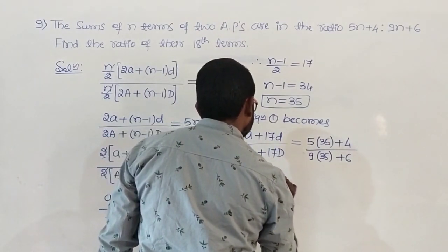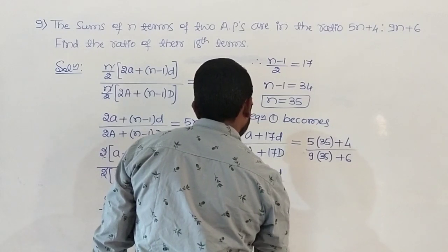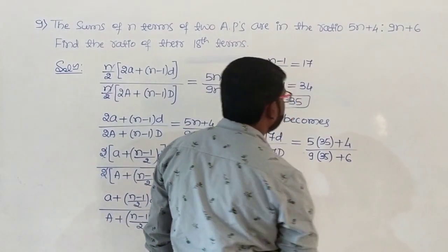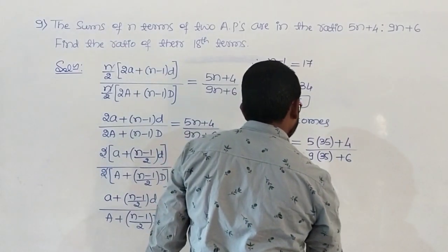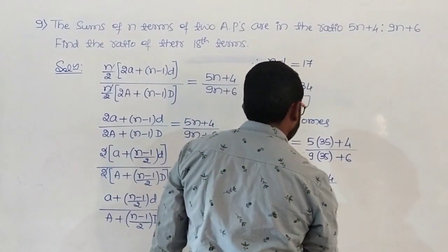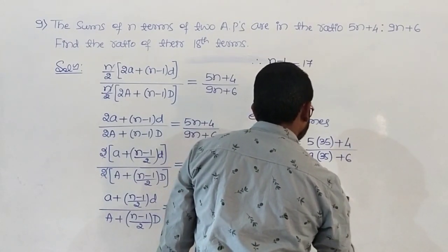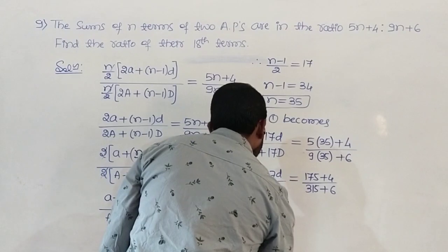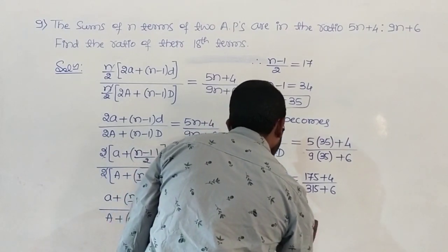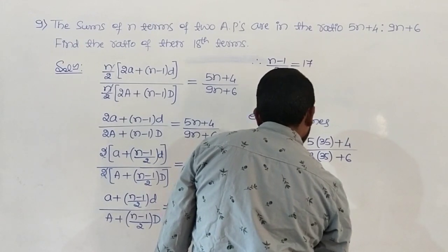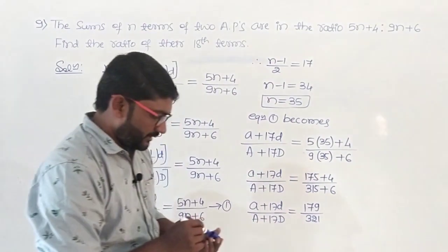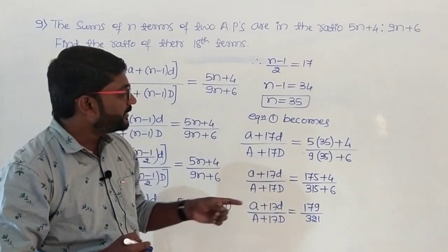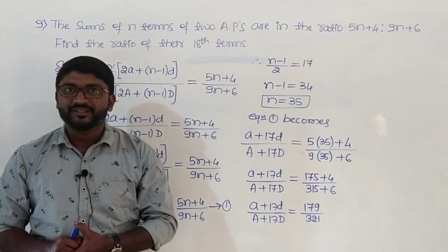So a plus 17d divided by A plus 17D equals 5 into 35 plus 4 over 9 into 35 plus 6, which is 175 plus 4 over 315 plus 6, giving 179 divided by 321. Therefore the ratio of their 18th terms is 179 to 321. This is all about the 9th problem.